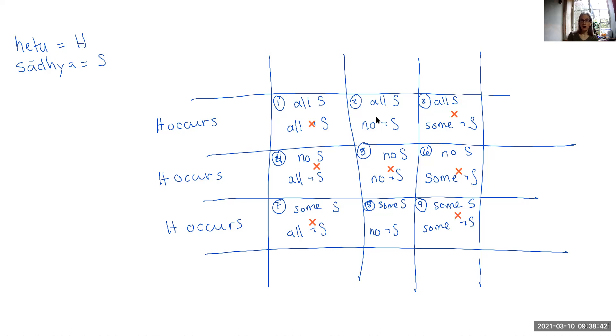That leaves us with two cases, that H occurs in everything that has the Sadia and nothing that doesn't have the Sadia, and that it occurs in some things that have the Sadia and nothing that don't. These two cells, so number two and number eight, are the ones that correspond to Heitus that meet the tri-rebit Heitu, that have the three characteristics of an acceptable mark. So this is cool because this is a really explicit categorization of all of the possibilities of the relationship between the Heitu and the Sadia, and the tri-rebit via Heitu goes through and systematically excludes all of the cells which are not going to give you good justifications.